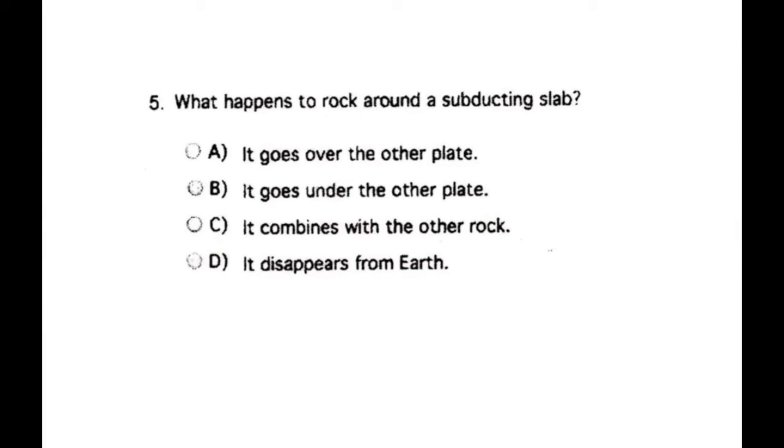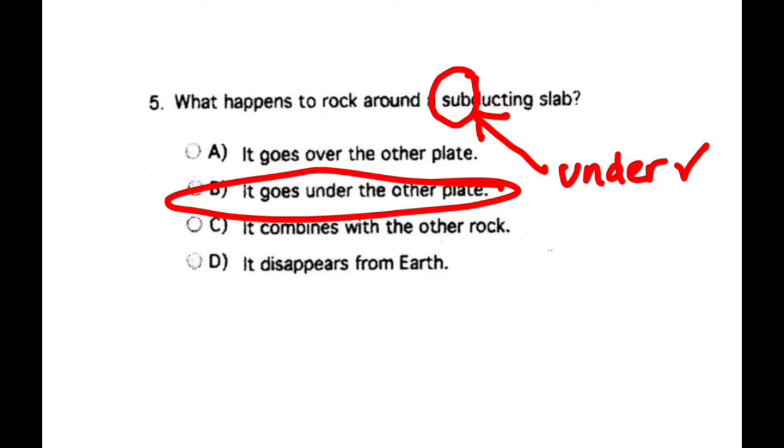Number five, what happens to rock around a subducting slab? So the word has this prefix on it, sub, and sub means beneath or under. So if we look at all these answer choices, we've got A, it goes over the other plate; B, it goes under the other plate; C, it combines with the other rock; or D, it disappears from Earth. So if I know what that prefix for subducting means, means under, I'm going to choose the one that says it goes under the other plate.